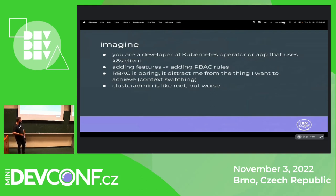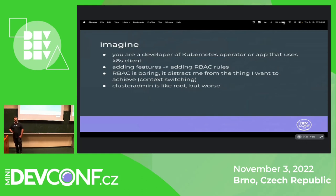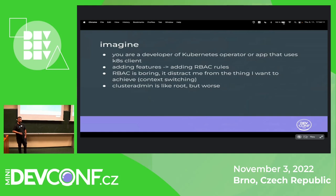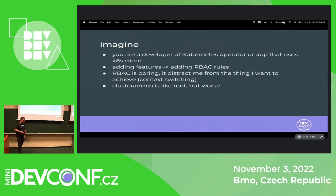You have to switch all the time, and what people end up doing — or what I end up doing — is basically saying I don't care about the RBAC, I just give my application cluster-admin and do the security eventually. But this is a bad thing to do because you basically never do it in the future, and it opens a huge potential risk for your cluster. If there is a cluster-admin role these days, you've got all these various supply-chain attacks on software where if somebody attacks your application it will have full cluster-admin and can do whatever with your cluster.